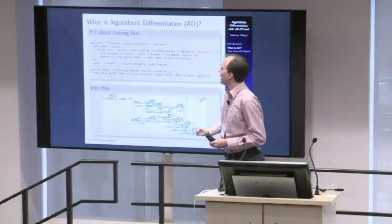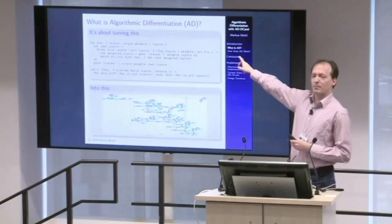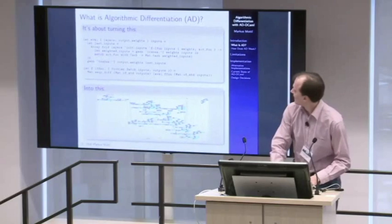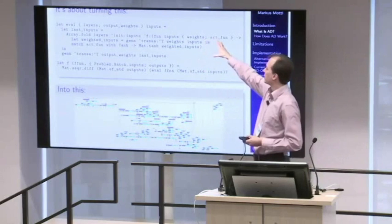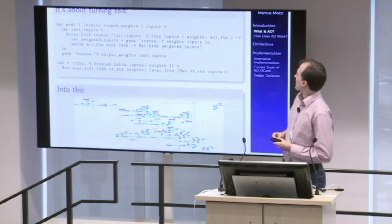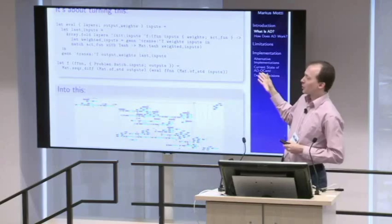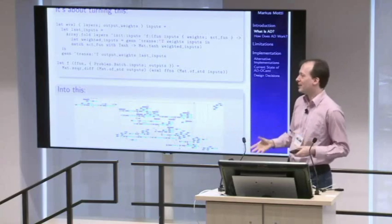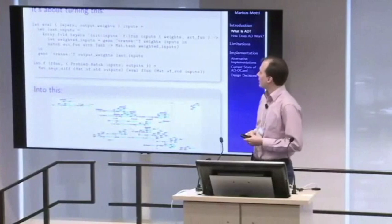It is basically about turning something like this into something like that. This is the implementation of a feed-forward neural network in OCaml — no bells and whistles, just bare bones. It should not be seen as an endorsement of neural networks, but most people with some exposure to machine learning know about them, so it's a good example.